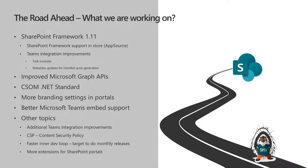Quick recap on the SharePoint roadmap, because these questions came up during the chat. Right now, what we're working on is SharePoint Framework 1.11, and the primary reason is to make sure that SharePoint Framework support for AppSource and Office Store is in an optimal situation. We're making small adjustments related to metadata auto-generation and ensuring all of that is working. We're also enabling task modules to be exposed to SharePoint Framework solutions.